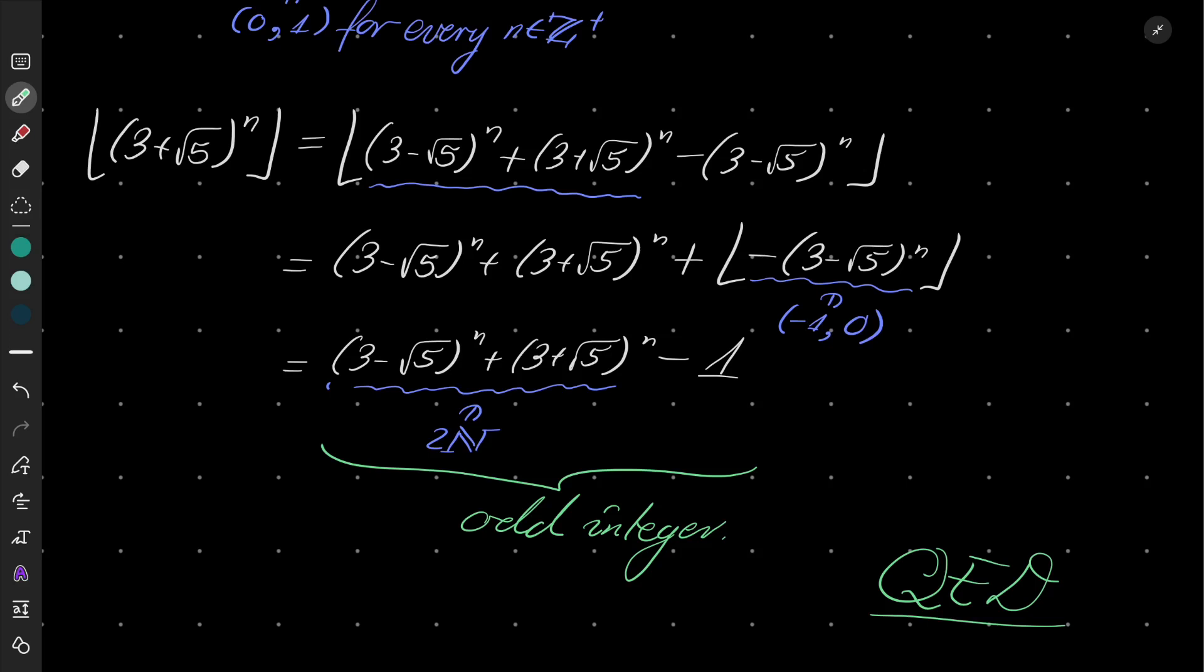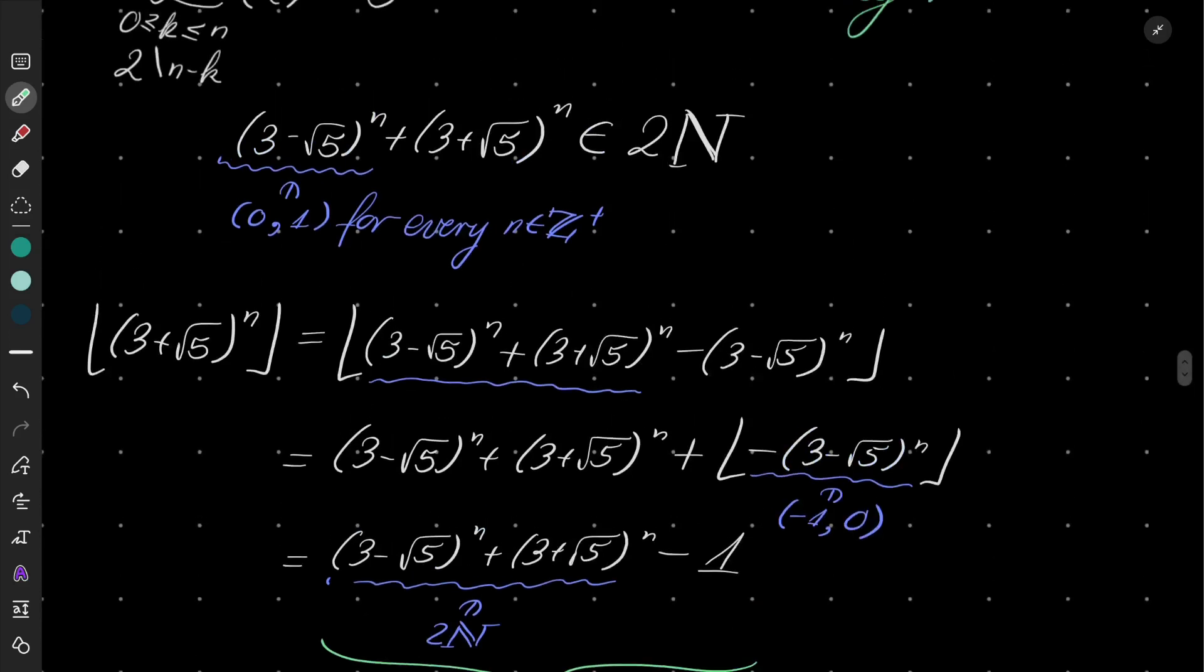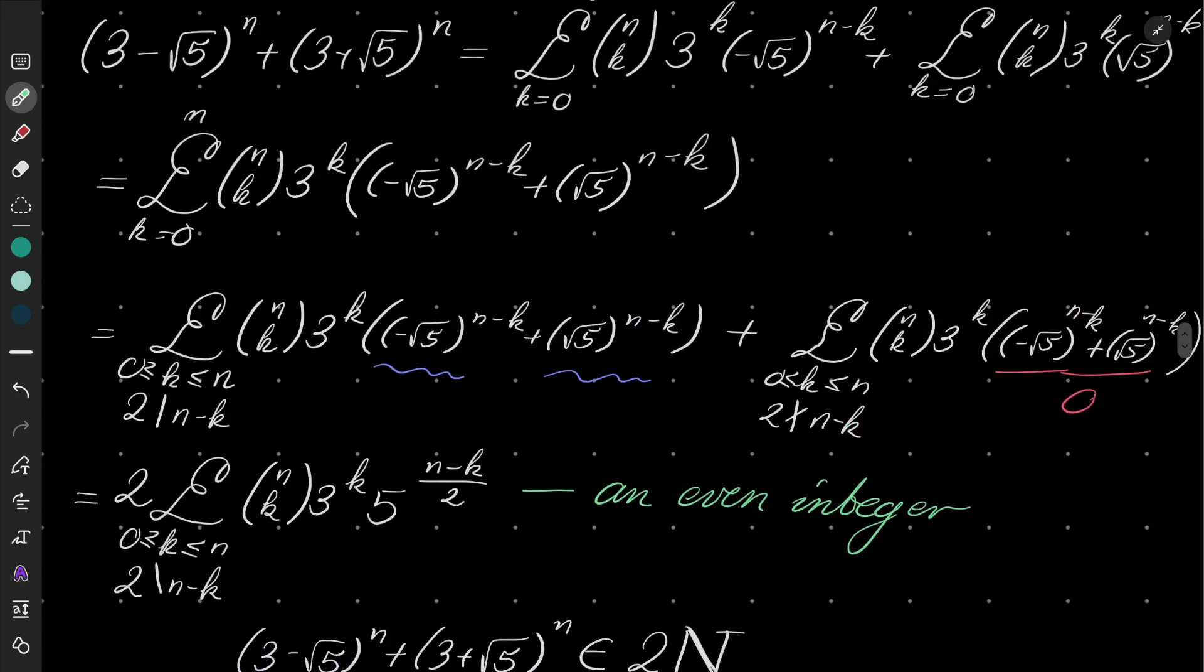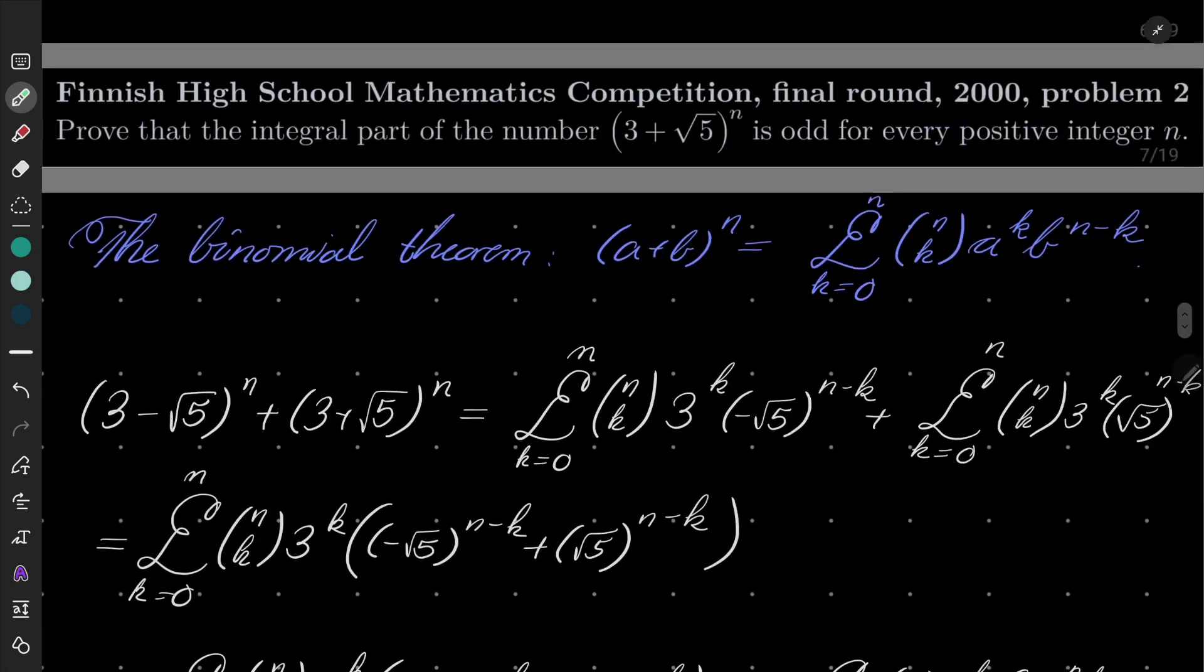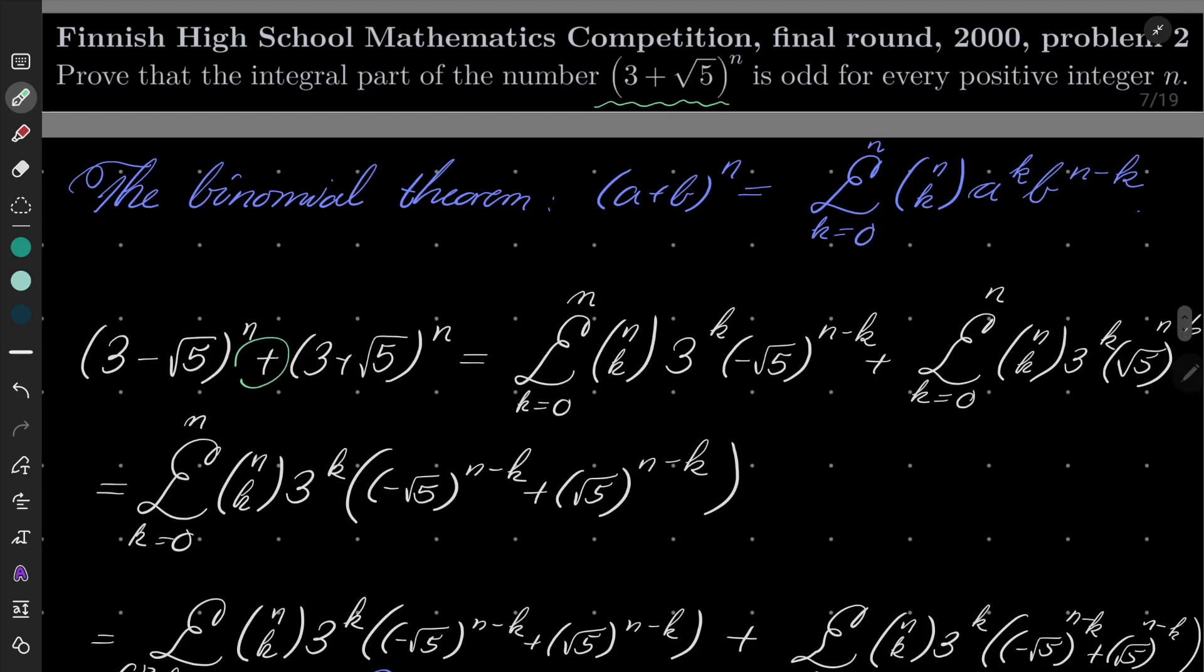So the thing to remember from this problem: very often, it probably won't be the last problem where we have (3 + some square root)^n. In these types of problems, it is very beneficial to consider the conjugate of this number. When we have 3 plus some square root, it may be a good idea to consider 3 minus the same square root and to combine these numbers, either by adding them or subtracting them, and by using the binomial theorem. Binomial theorem is also very important in these types of problems.